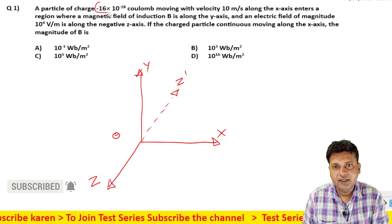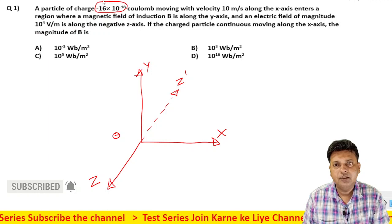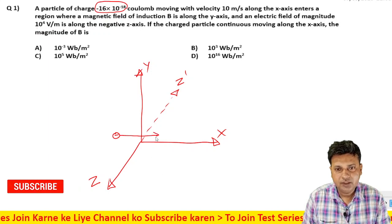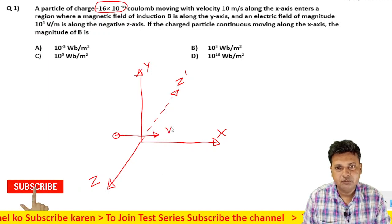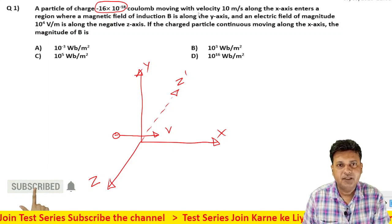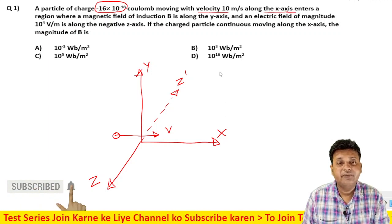Now the charged particle is the electron - negative charge. The electron is moving in positive x direction along the x-axis.